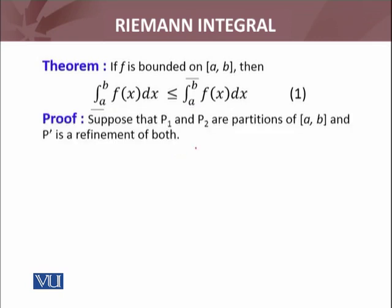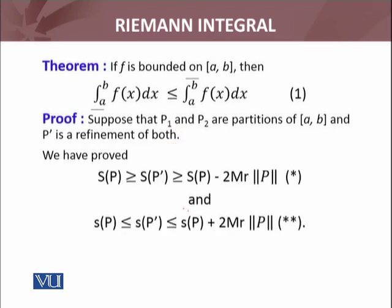Suppose that P₁ and P₂ are partitions of [a, b], and P' is a refinement of both P₁ and P₂. For refinement, we just proved a lemma: that if P' is a refinement, then the upper sums satisfy this inequality. And the lower sums satisfy this inequality. I'm denoting the upper sums inequality with a single asterisk and the lower sums with double asterisk.